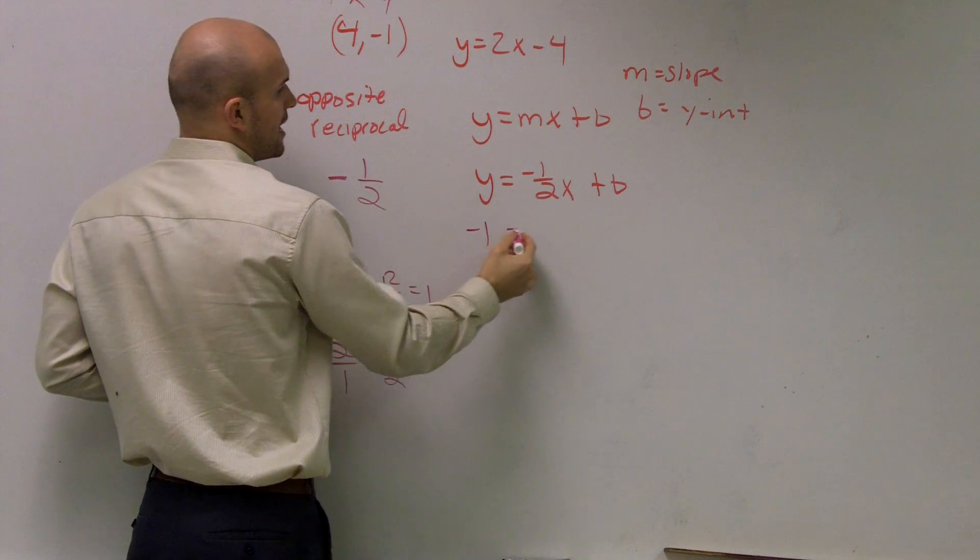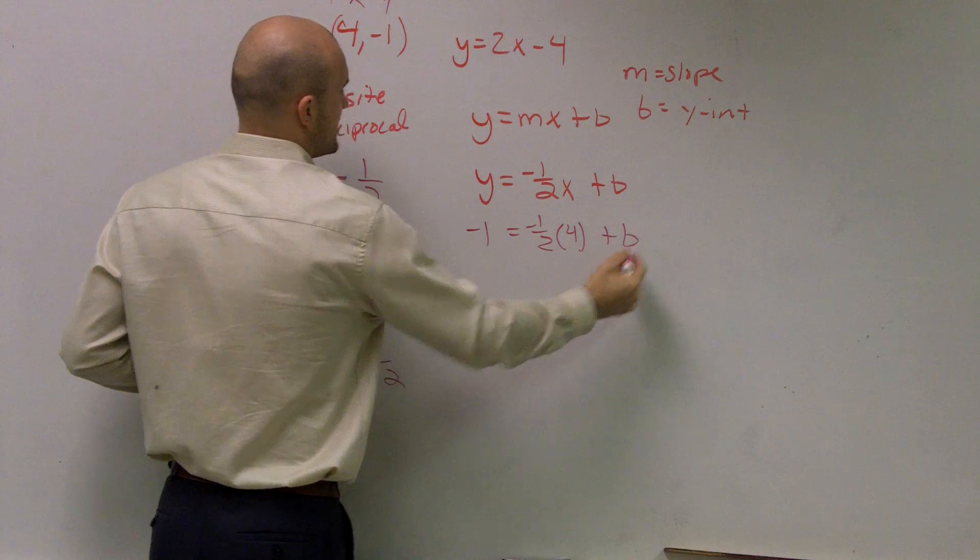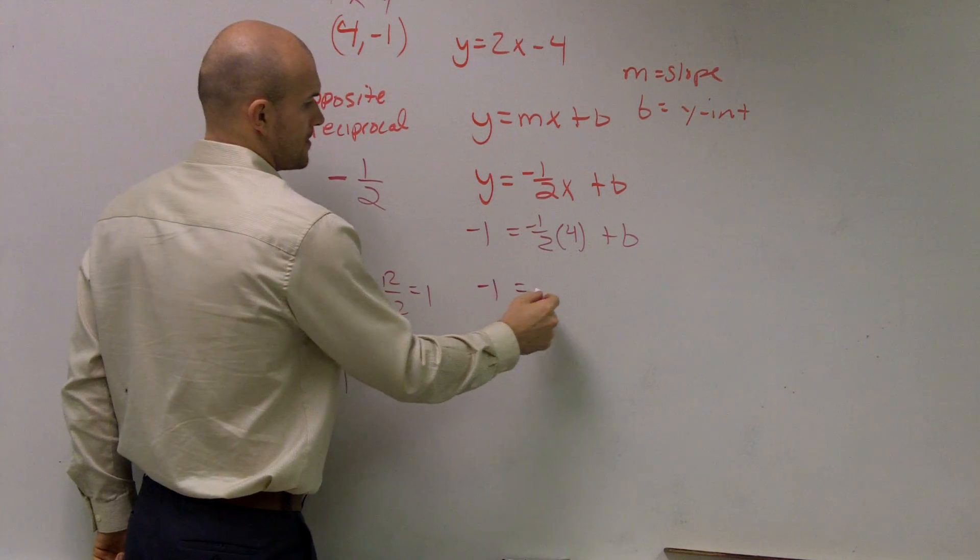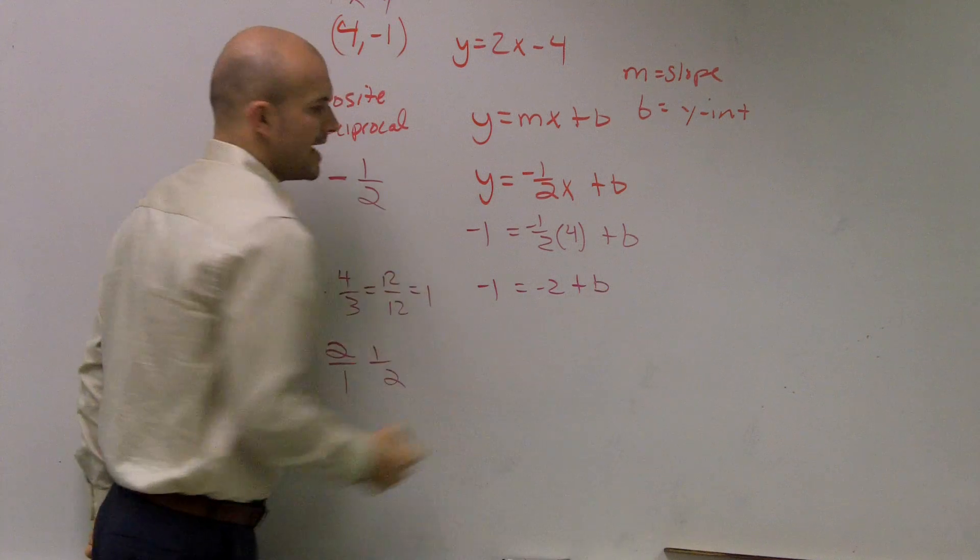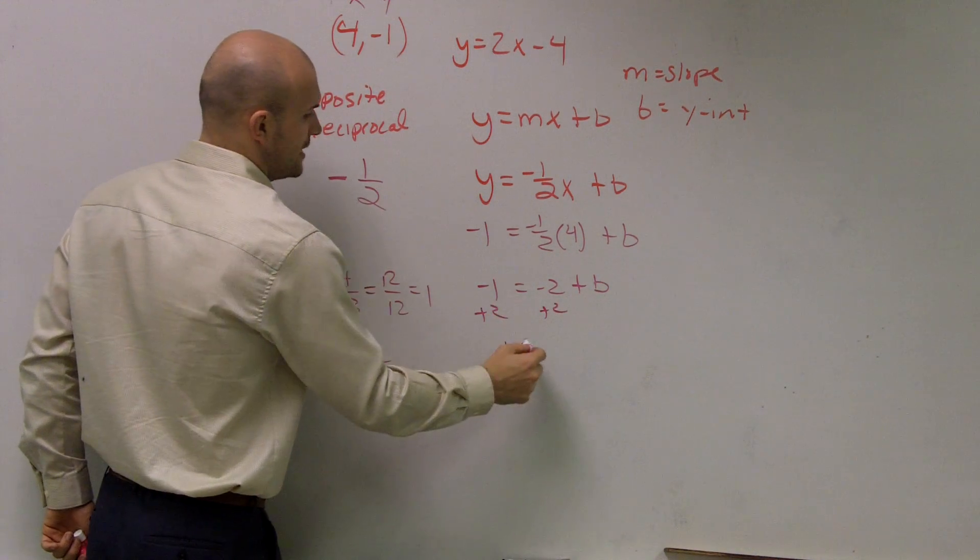So I'll plug in -1 for y equals -1/2 times 4 plus b. Well, 4 times -1/2 is -2. Now, to solve for b, I add 2 to both sides. 1 equals b.